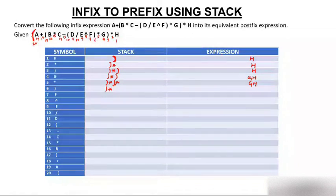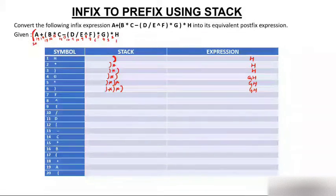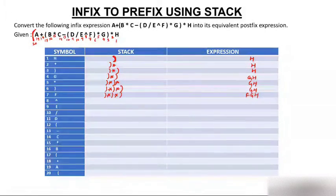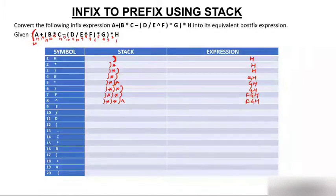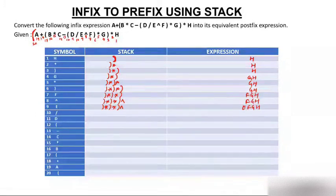Another closing bracket is encountered. Then operand f comes — f is an operand, so it goes to the expression, giving f, g, h. Then power (^) comes. Since power has higher priority than multiply, the multiply operators stay and power comes onto the stack. Then operand e is encountered — e is an operand, so we now have e, f, g, h in the expression.